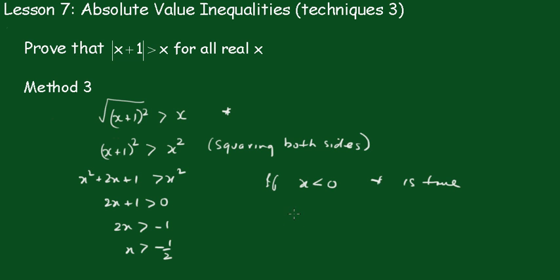So what we have, we've got the situation where we know it's true for x less than 0, that way. And we know it's true for x greater than negative 1 half, that way. Therefore, we're true. That's minus 1 half there. True for all x. But again, the graphical method is the preferred method.